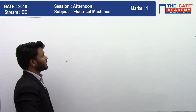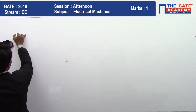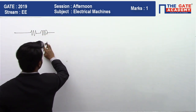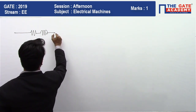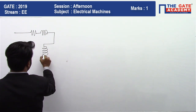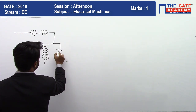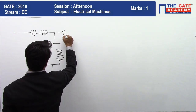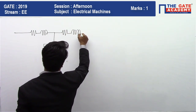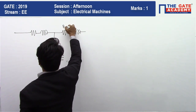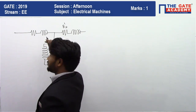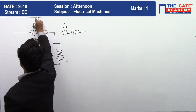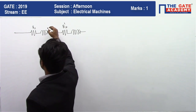Let us first draw the per-phase equivalent circuit of a three-phase induction motor. It has primary resistance — the stator resistance R1 — and stator reactance X1, followed by the magnetizing branch consisting of the magnetizing reactance in parallel with the core loss resistance. Then we have R2 dash, the rotor winding resistance referred to the primary (stator) side.